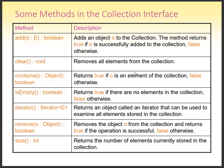Some of the methods of the collection interface: if you want to add something, the first method is the add method — it adds an object to the collection. The method returns true if the object is successfully added to the collection, false otherwise. So we are checking whether the object is added or not.